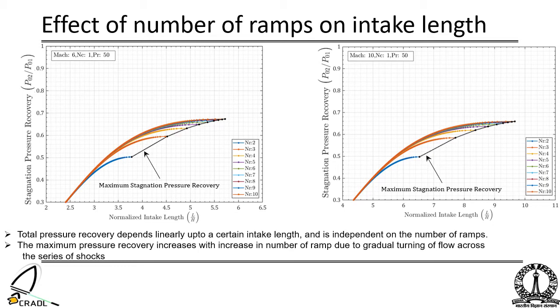The maximum pressure recovery increases with increase in number of ramps due to gradual turning of flow across the series of shocks. For instance, for a flight Mach number of 6 with a desired pressure ratio of 50 and number of cowls 2, with an increase in number of ramps from 2 to 3, there is an 18.2 percent increase in peak stagnation pressure recovery factor, but with a penalty of 17.5 percent increase in intake length.